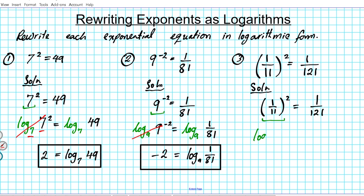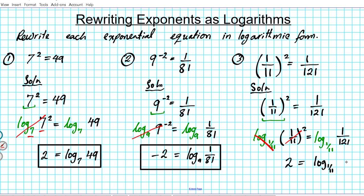We take log base (1/11) of the left side — which is (1/11) squared — and log base (1/11) of the right side, which is 1 over 121. On the left side the cancellation occurs: the base of the log and the exponent are identical, so they cancel. We're left with the power: 2 = log base (1/11) of (1/121).